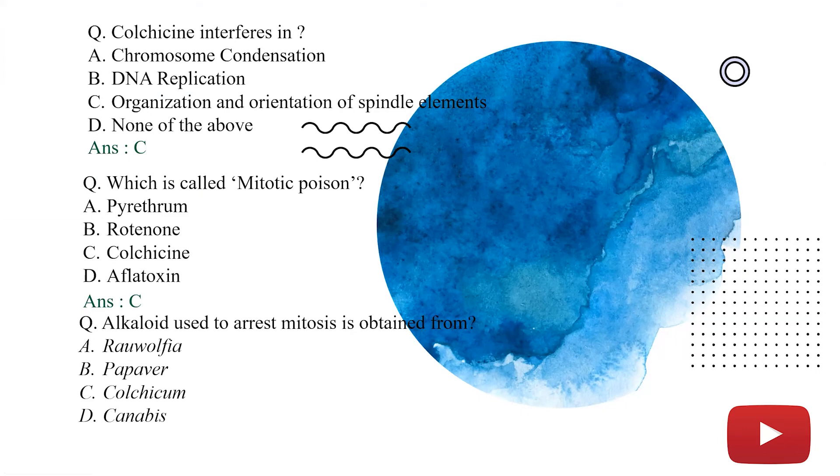Next question is, alkaloid used to arrest mitosis is obtained from plant ki baat ho rhi hai, okay? Option A, rawolfia. Option B, pepivor. Option C, colchicine. And option D, cannabinoids. Humayi pata hai ke colchicine is obtained from a plant which is known as colchicine autumn nail. Answer kya ho ga? The C, colchicine.